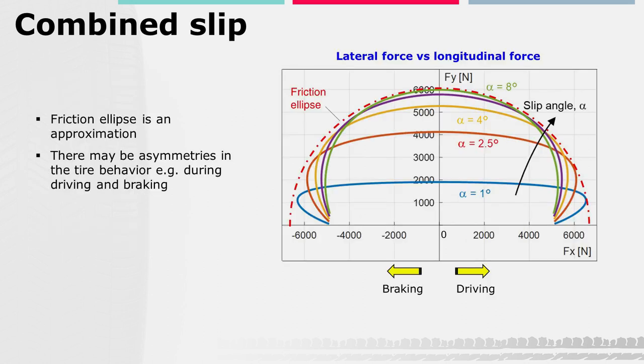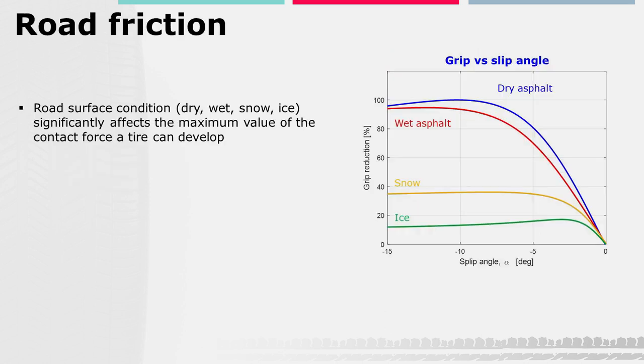It must be noted that the friction ellipse represents an approximation of the real behavior of the tire. The figure presents experimental data related to a passenger car tire. Asymmetries in the tire behavior can be observed, for example during driving and braking. As mentioned, the tire-road friction coefficient bounds the maximum force a tire can develop, and it strongly depends on road surface conditions.